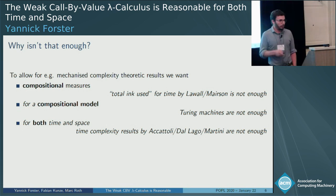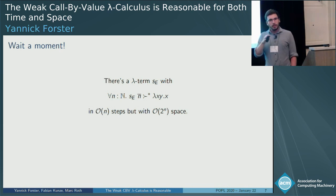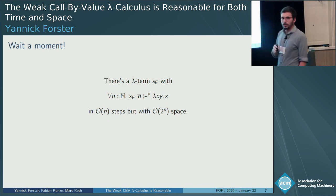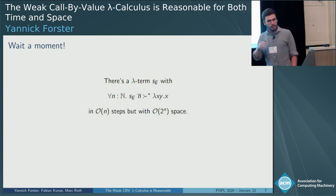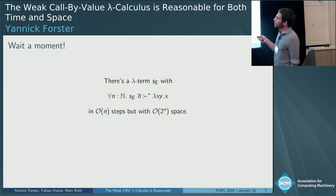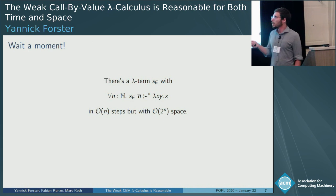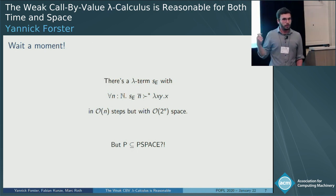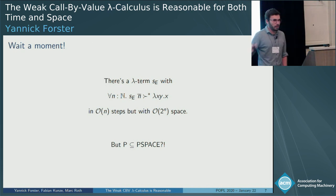You might be thinking this can't be right. It's known—pointed out explicitly by Accattoli and De Lago—that there are lambda terms with weird properties. Specifically, there is a lambda term that takes a church-encoded natural number, computes 2 to the x and throws it away. It reduces to a constant normal form in a linear number of steps, but uses exponential space in between. Since P is a subset of PSPACE, something seems off.